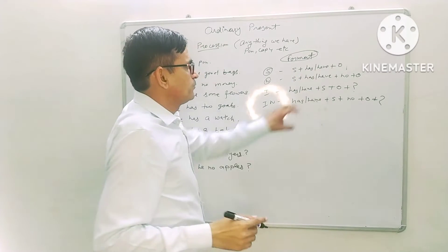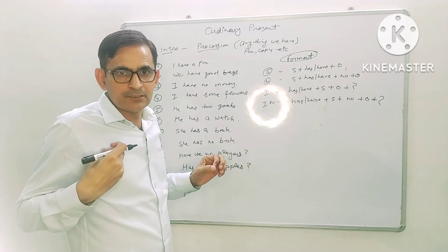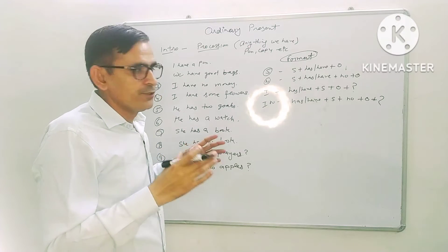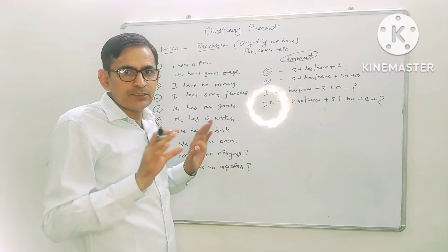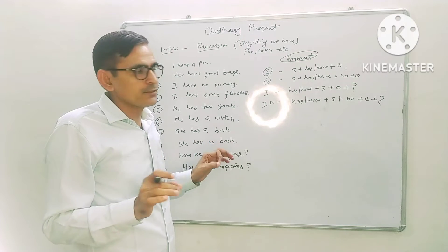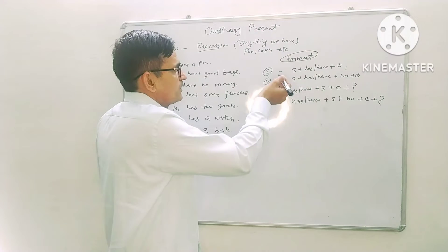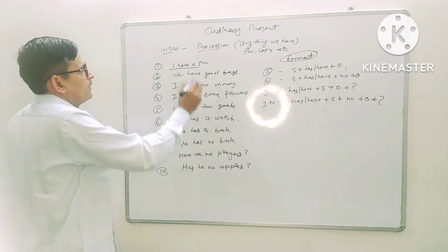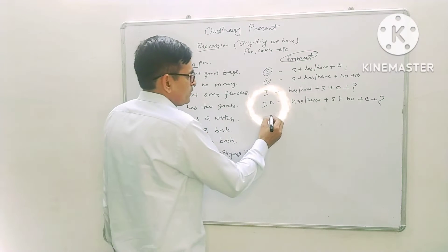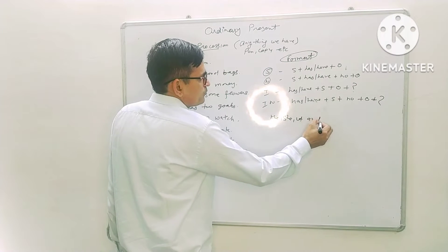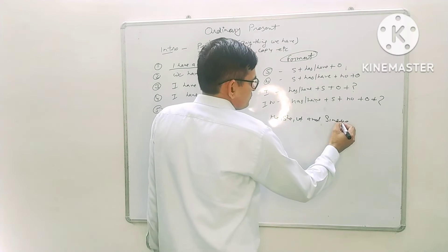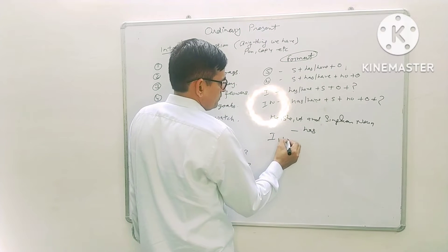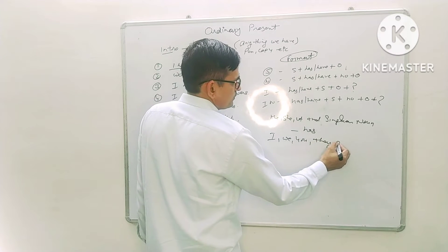The format is in front of you: subject, has/have, object. We have anything — I have this shirt, I have this pen, I have this board. These things are ours; we purchase any item and keep those items with us for a long time. When we talk about pronouns 'he,' 'she,' 'it,' and singular nouns, we use 'has.' When we use 'I,' 'we,' 'you,' 'they,' and plural nouns, we use 'have.'